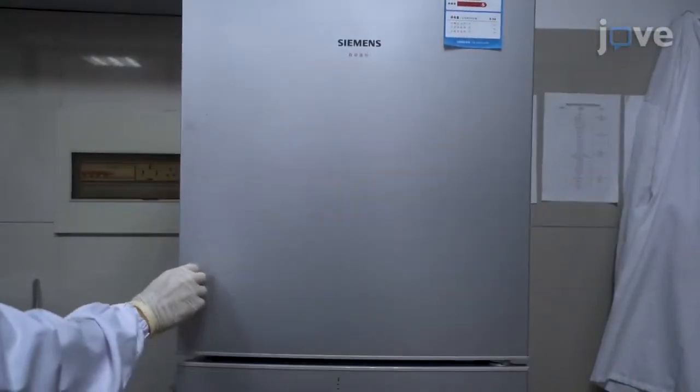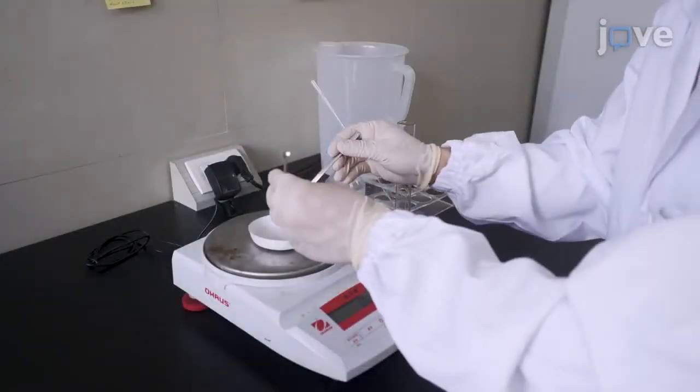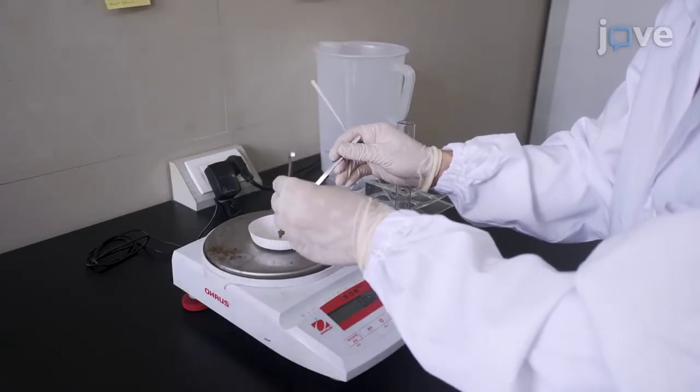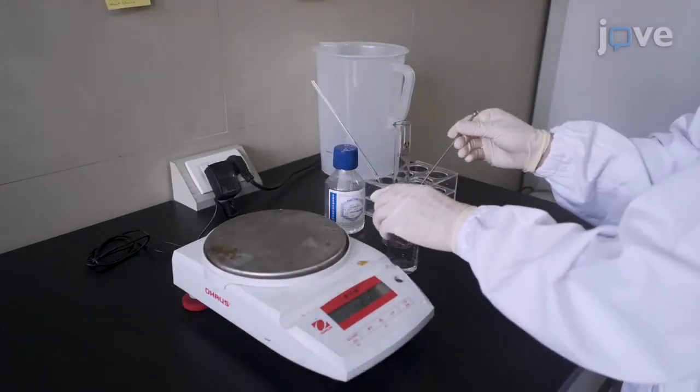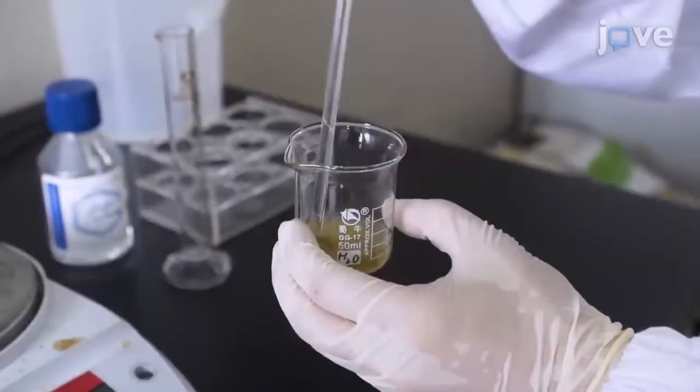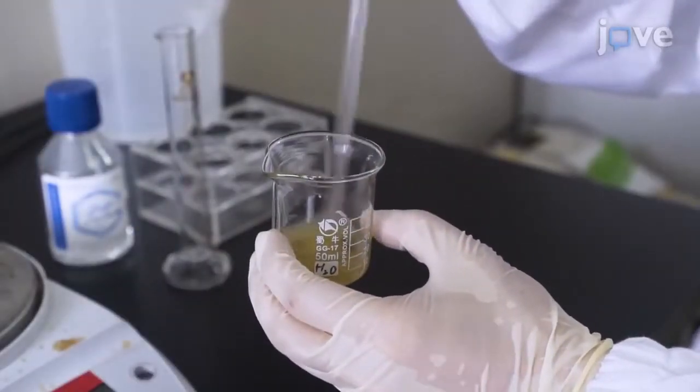To prepare a human fecal sample, transfer 1 gram of fresh fecal sample into 10 milliliters of 0.1 molar anaerobic PBS at pH 7 in a glass beaker. Then use a glass rod to stir to achieve a slurry.